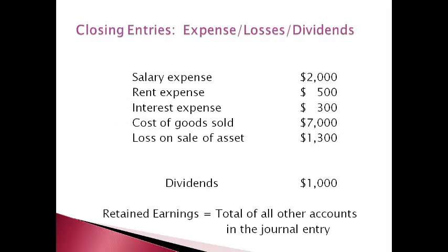Expenses, losses, and dividend accounts have a debit balance, and therefore it takes a credit to make the balance zero. The amounts are moved to retained earnings with a debit, and the amount for retained earnings is the total for all the other accounts in the journal entry.